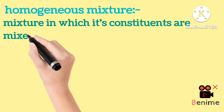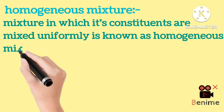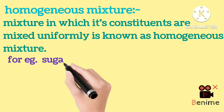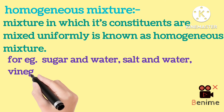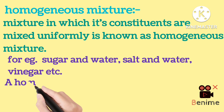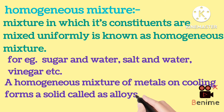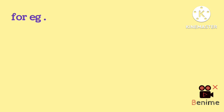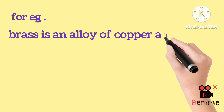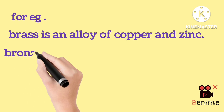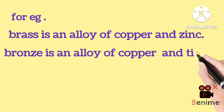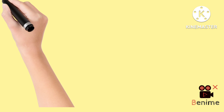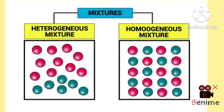A mixture in which its constituents are mixed uniformly is known as a homogeneous mixture. For example, sugar and water solution, salt and water solution, vinegar, etc. A homogeneous mixture of metals on cooling forms a solid called an alloy. For example, brass is an alloy of copper and zinc, and bronze is an alloy of copper and tin.